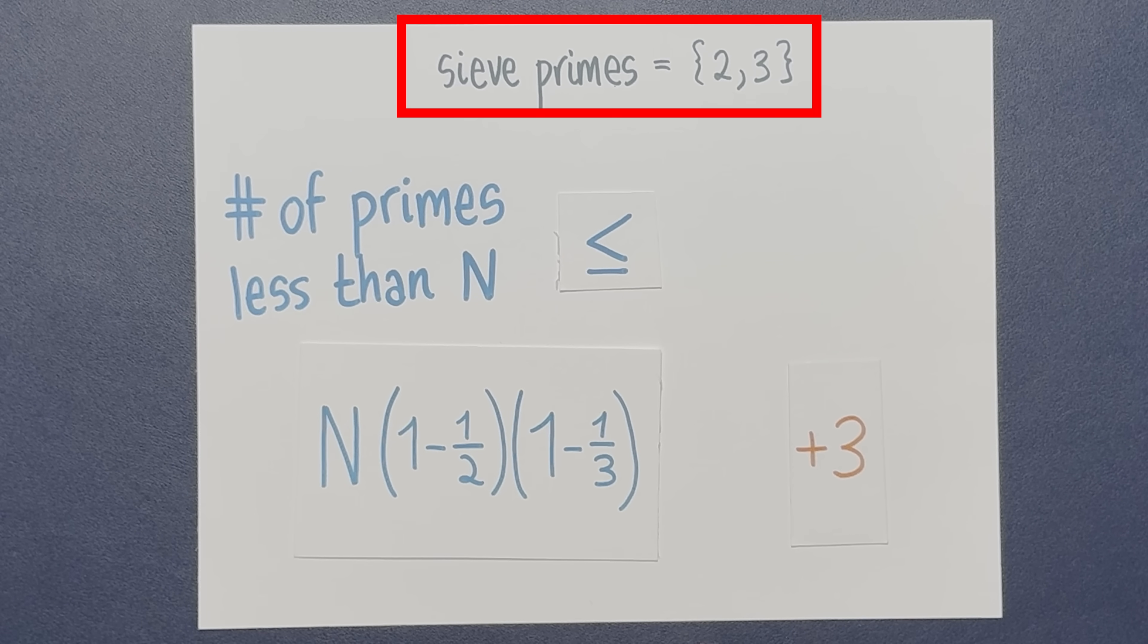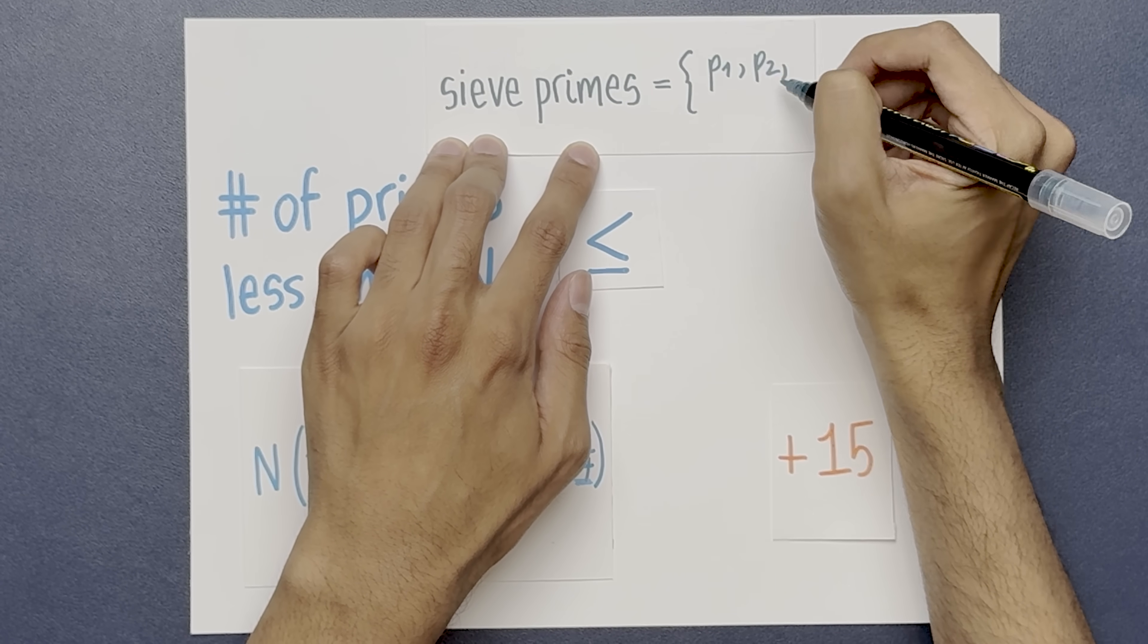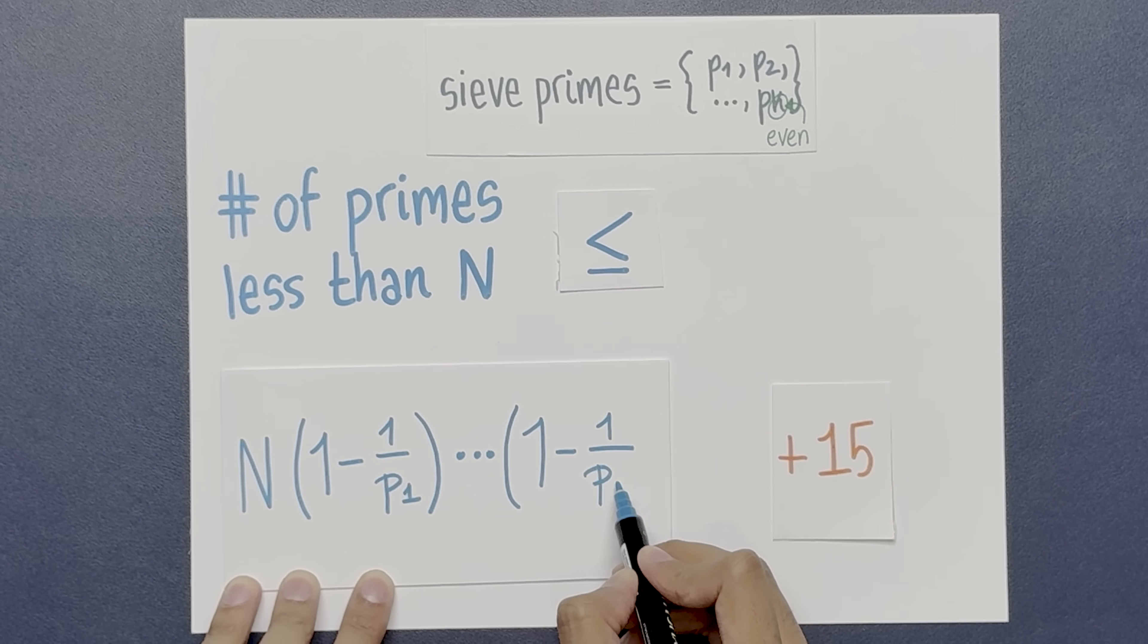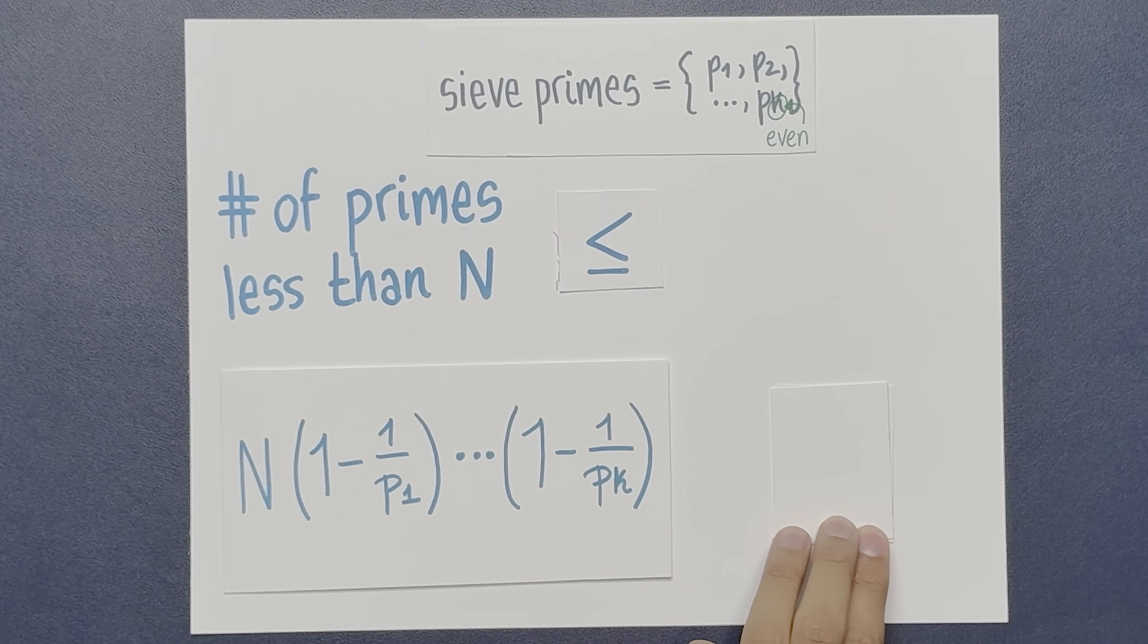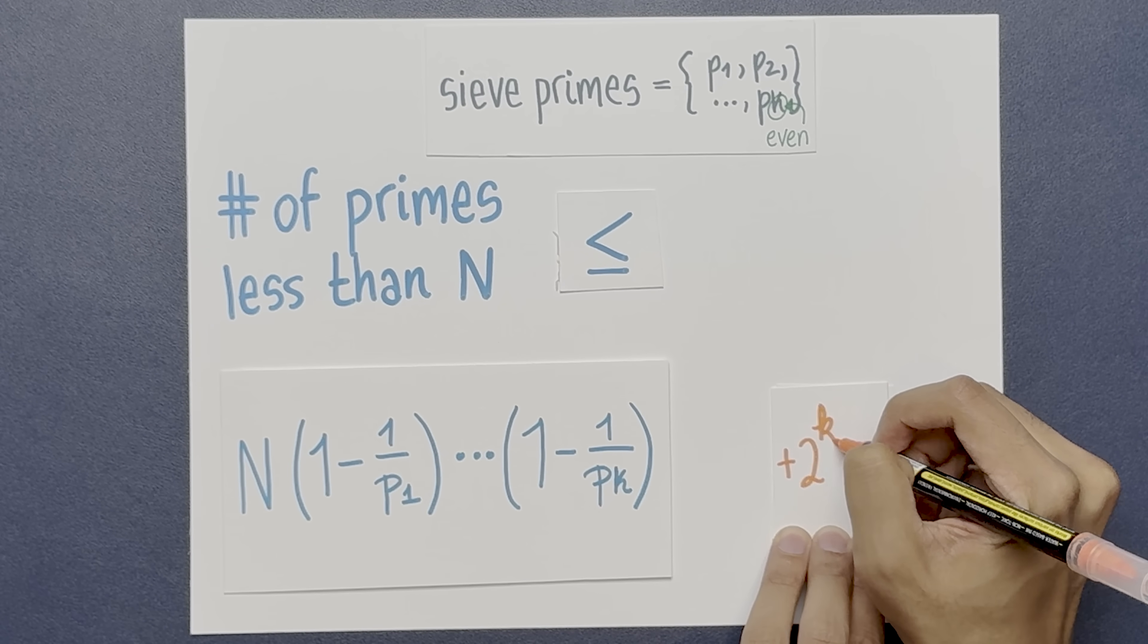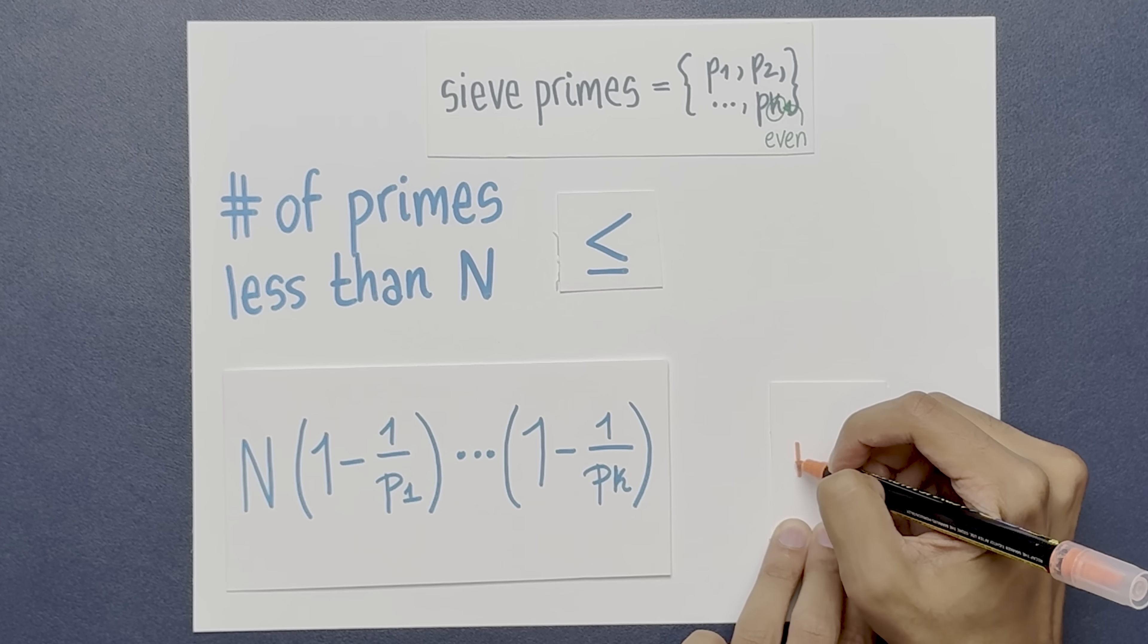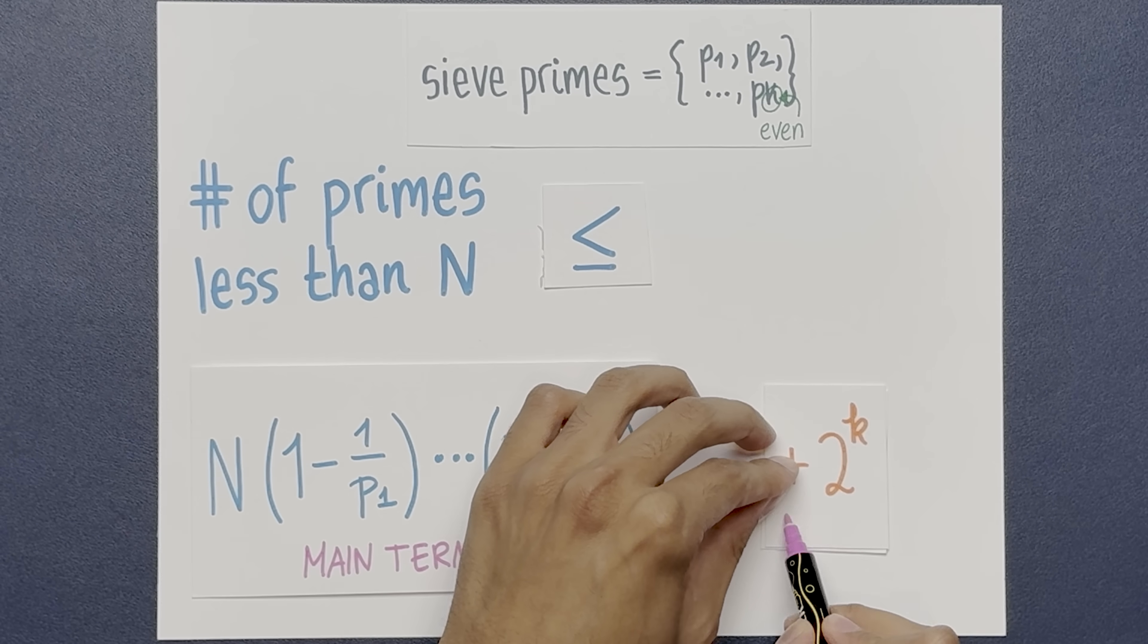Let's substitute that into our formula. The reason we do this is that there's one term in the product corresponding to each sieving prime. So here we started with 2 primes, 2 and 3. Now suppose we start with k primes, p1 to pk. k has to be even so that you're over-counting the number of primes. Continuing the pattern, the main term would look like this. There's one term in the product corresponding to each sieving prime. There would be 2 to the k minus 1 error terms, epsilon sub i. Since they're between minus 1 and 1, their sum would be bounded by 2 to the k minus 1. That minus 1 is a bit awkward, so we'll get rid of it at the cost of making the right hand side a bit bigger.